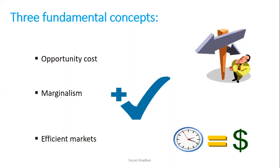For example, if I have the option to attend a class at the university, but at the same time I could go to work as a waiter or waitress at a restaurant and get paid five dollars per hour — if I choose to come to the university for one hour, what I forego is the five dollars. These five dollars represent my opportunity cost because I made the decision to come to the university.